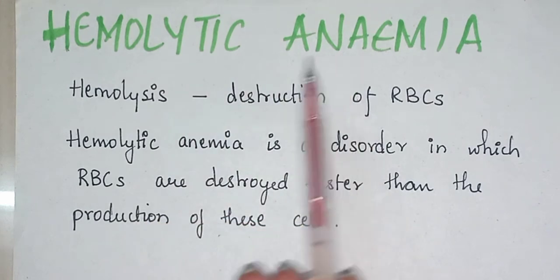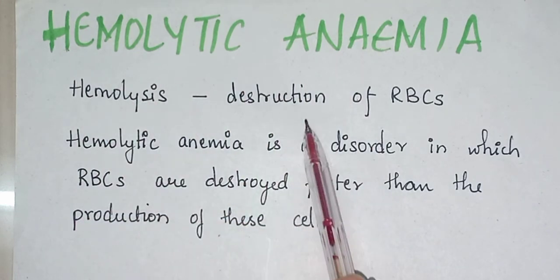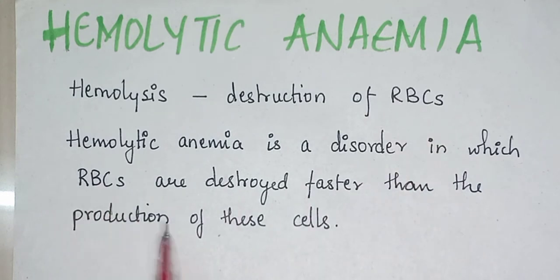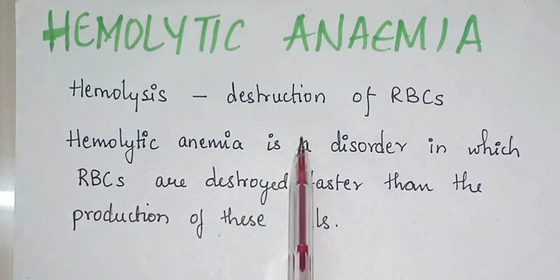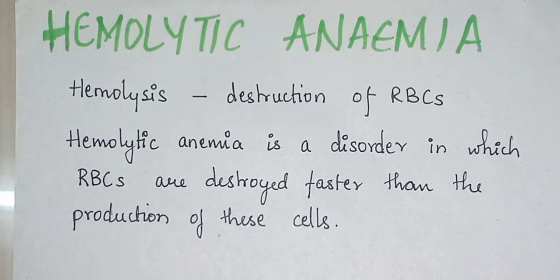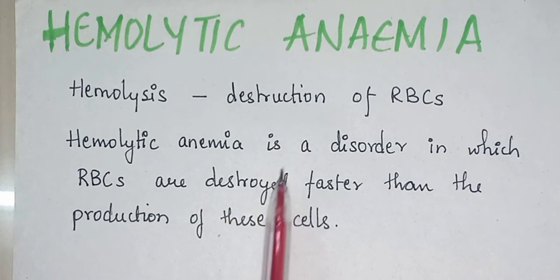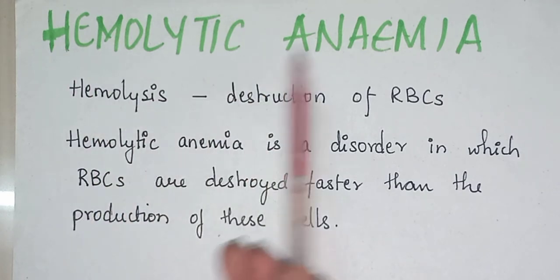Hemolytic anemia. The term hemolysis means destruction of RBCs. Hemolytic anemia is a disorder in which RBCs are destroyed faster than the production of these cells. The rate of destruction and production do not match, and due to excessive destruction it leads to anemia. Anemia due to destruction of RBCs is called hemolytic anemia.